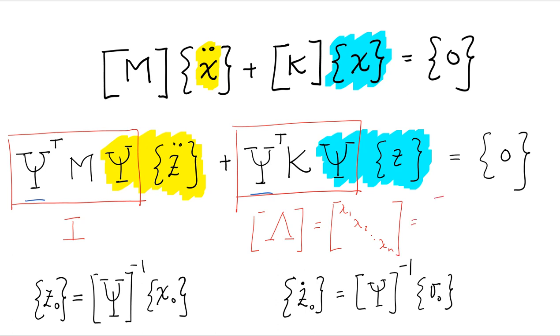Lambda equals to omega square. So this is omega one square, omega two square, etc., until omega n square. Zero everywhere else.